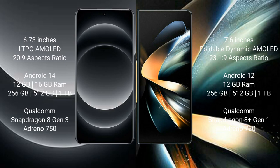Xiaomi 14 Ultra comes with a 6.73-inch LTPO AMOLED display with an aspect ratio of 20x9. Samsung Galaxy Z Fold 4 comes with a 7.6-inch foldable Dynamic AMOLED display with an aspect ratio of 23x1.